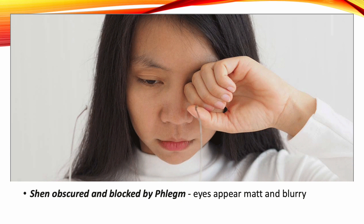When shen is obscured and blocked by phlegm, it can have difficulty radiating outwards, thereby creating a barrier in making contact with other people's shen. The eyes will appear matte and blurry. The person will often have the feeling that they are not fully present and in touch with the outside world. It is as if they are sitting in a bell jar or there is a mist between their eyes and the outside world.